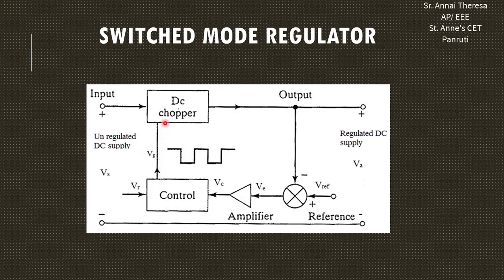Since we are giving these controlled gate pulses, we can get this controlled regulated output voltage — that is, regulated DC output voltage. This is the operation of the switched mode regulator.